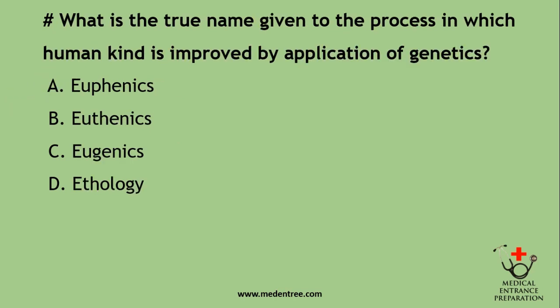What is the true name given to the process in which humankind is improved by the application of genetics? That is a terminology type of question. The correct answer is Eugenics.